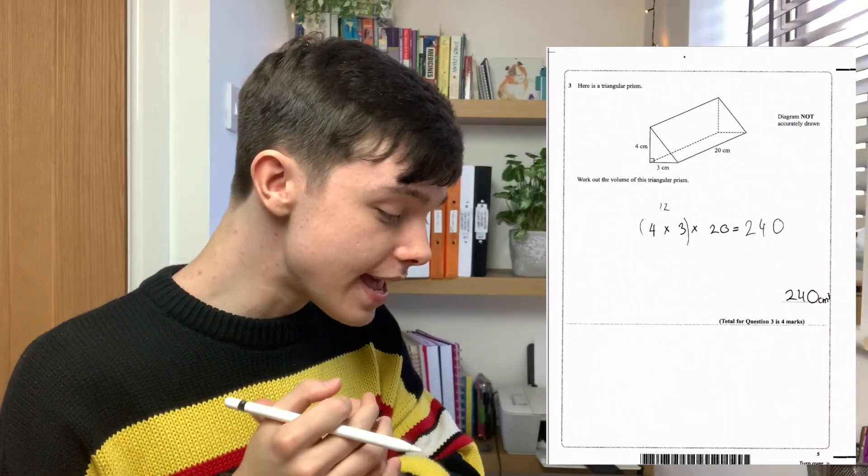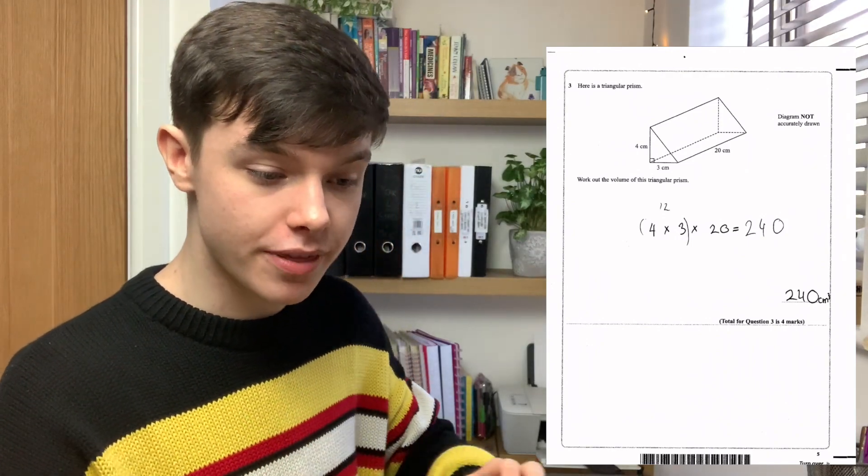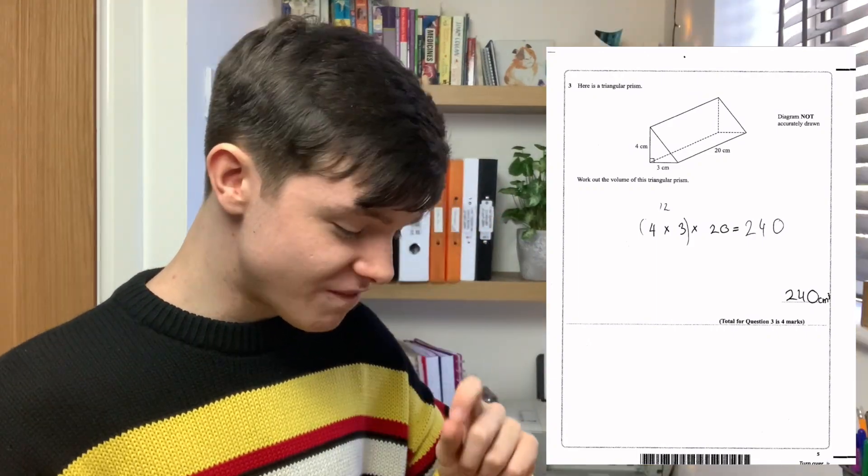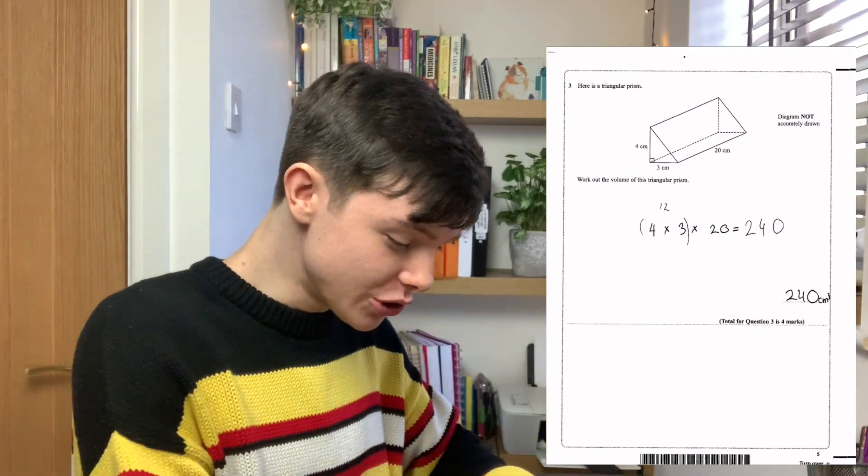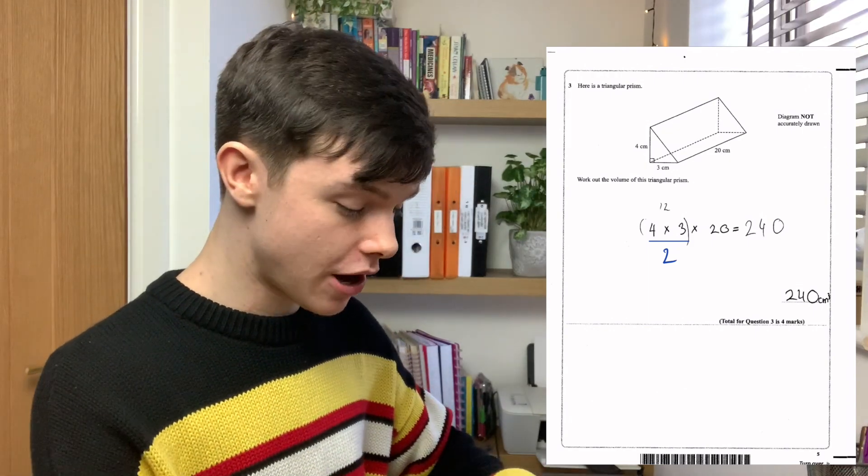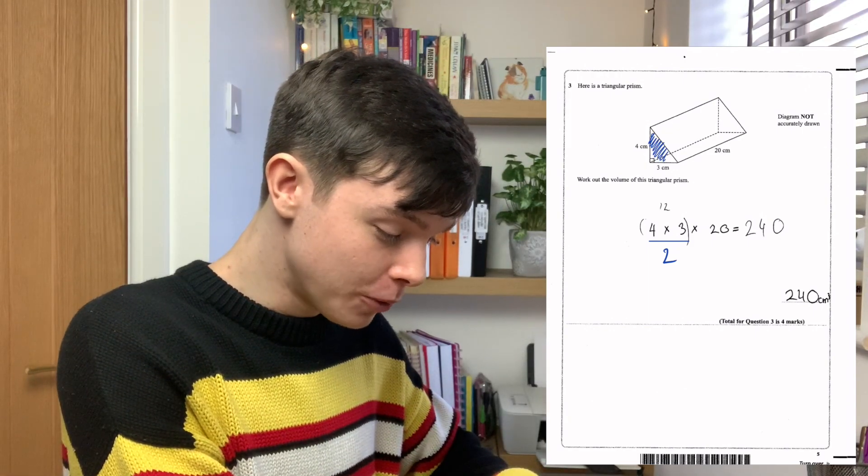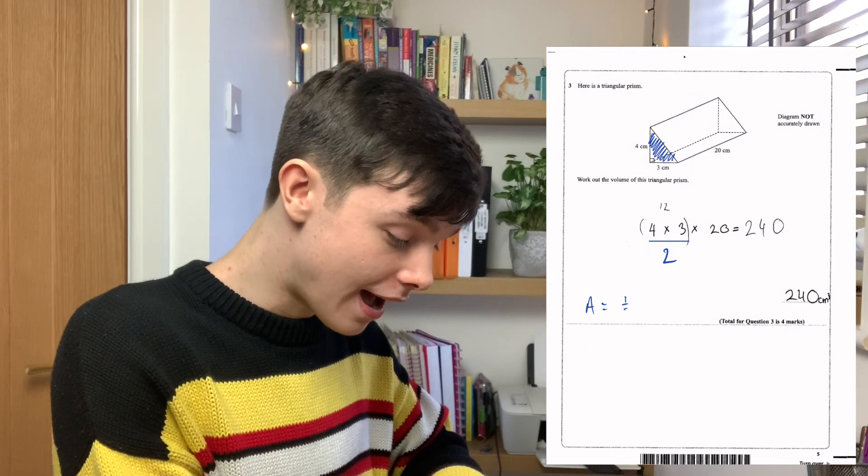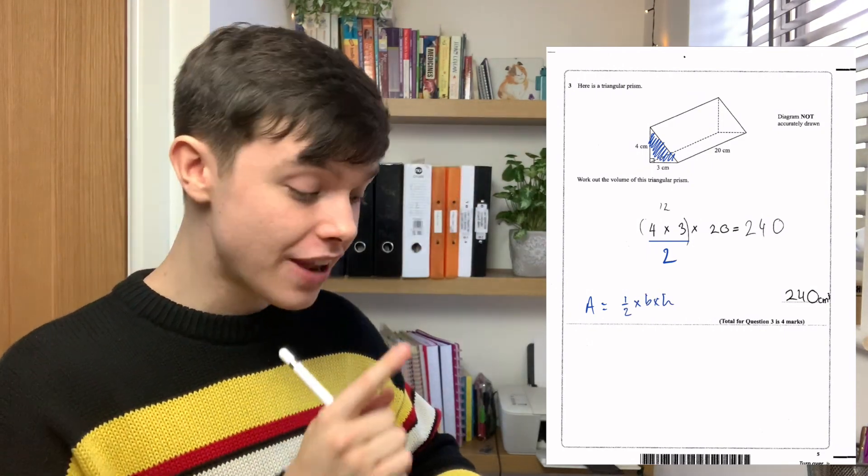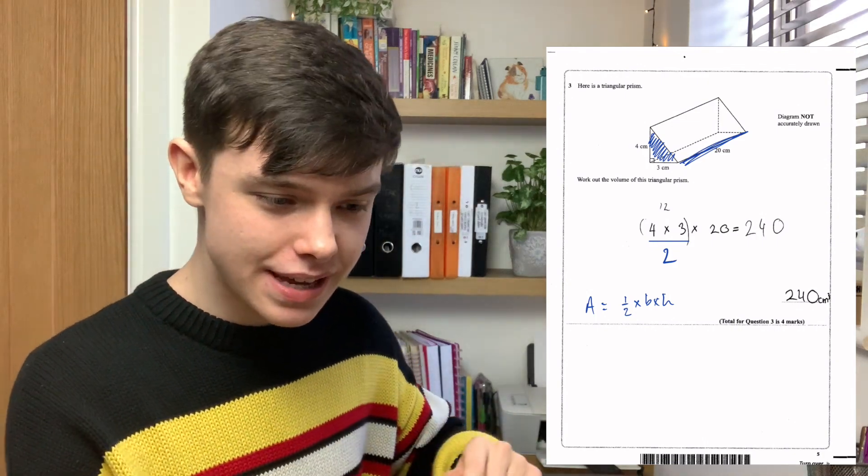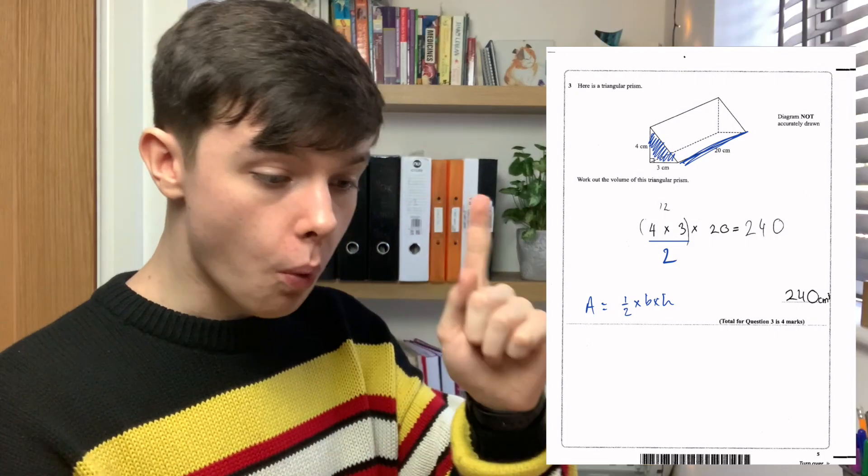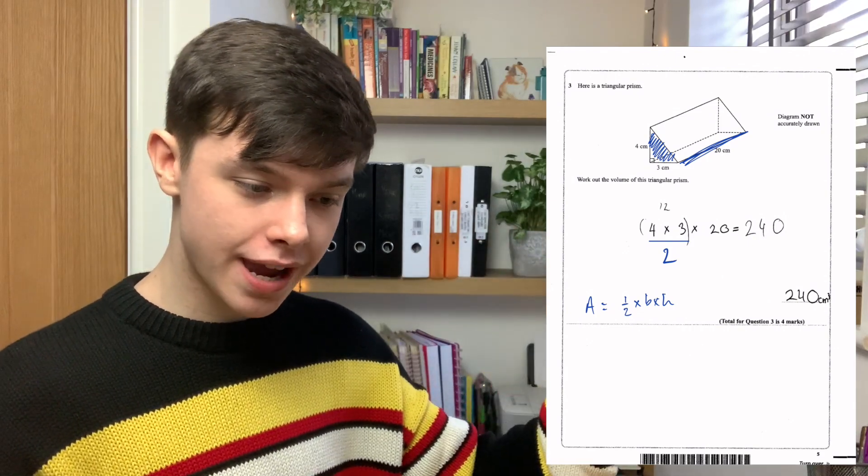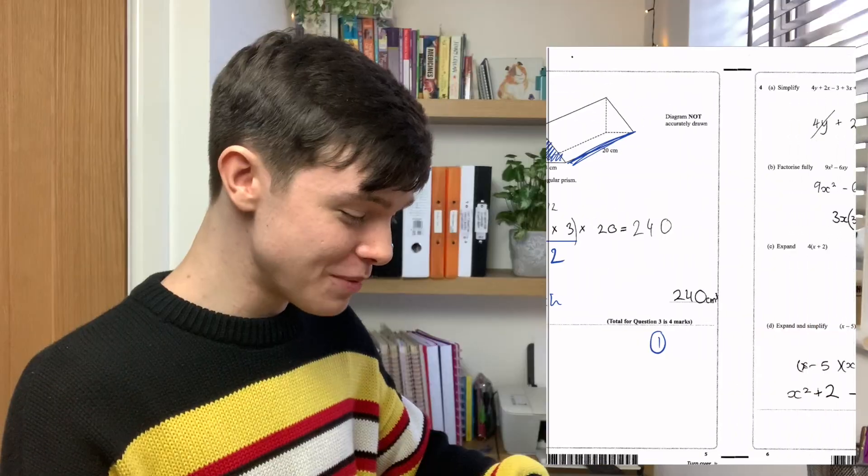Question three says here is a triangular prism. Work out the volume of the triangular prism. The answer should be 120. She's got 240. Very close. We needed half of the answer. There should be a little divide by two there because the area of a triangle is half times the base times the height. And then the volume we would times by the 20. We can give you one mark because you've put centimeters cubed. But the method marks for all the working out, we can't. You can have one mark.